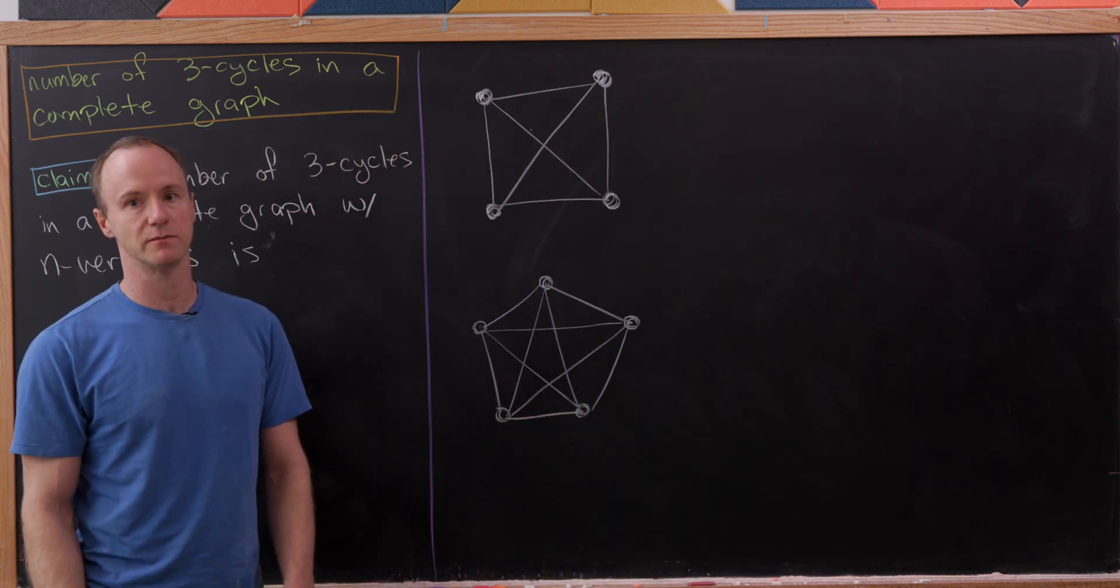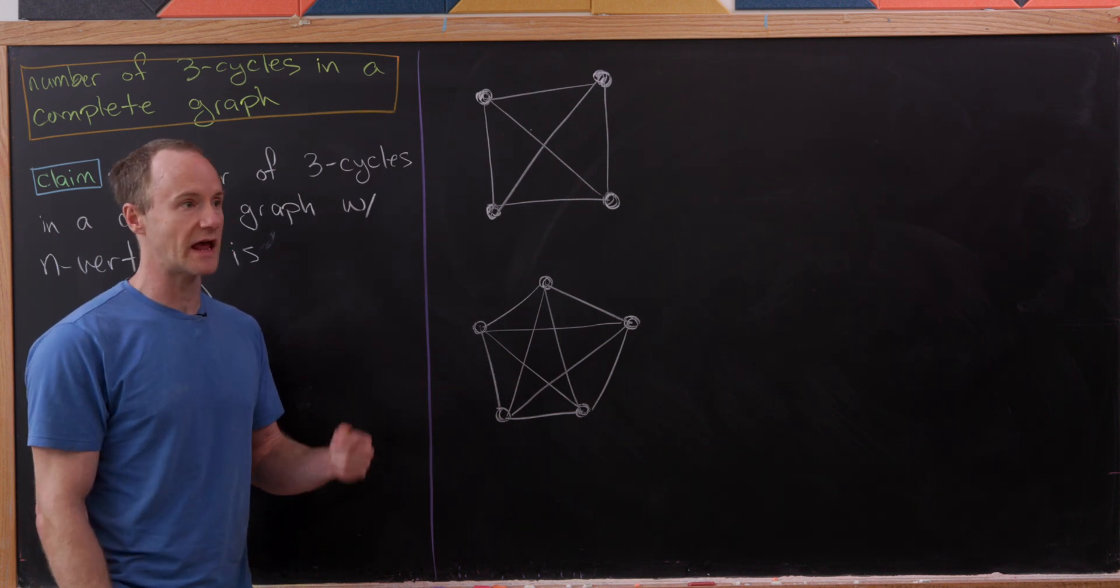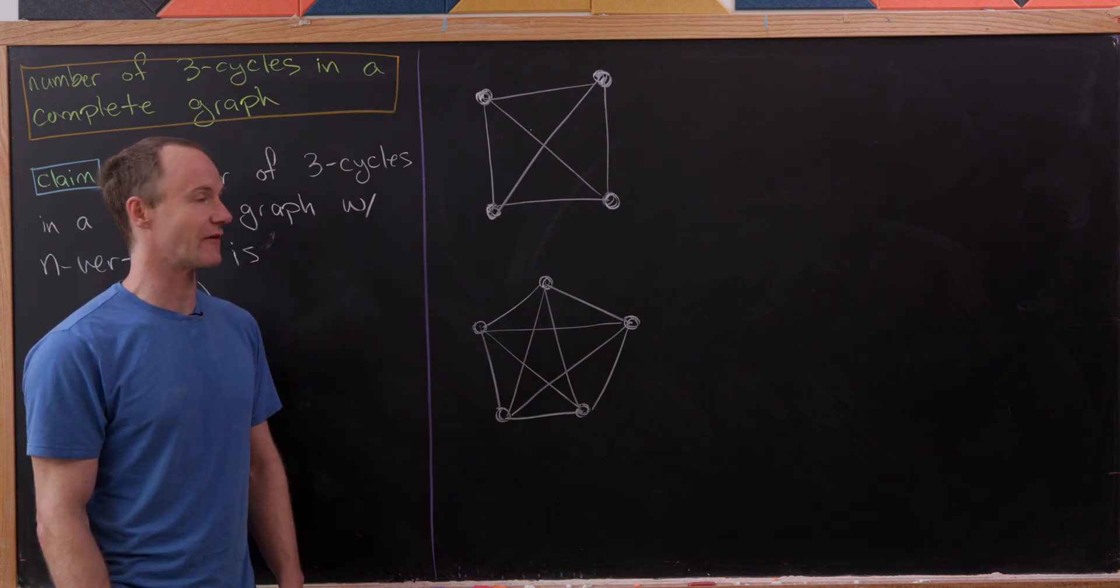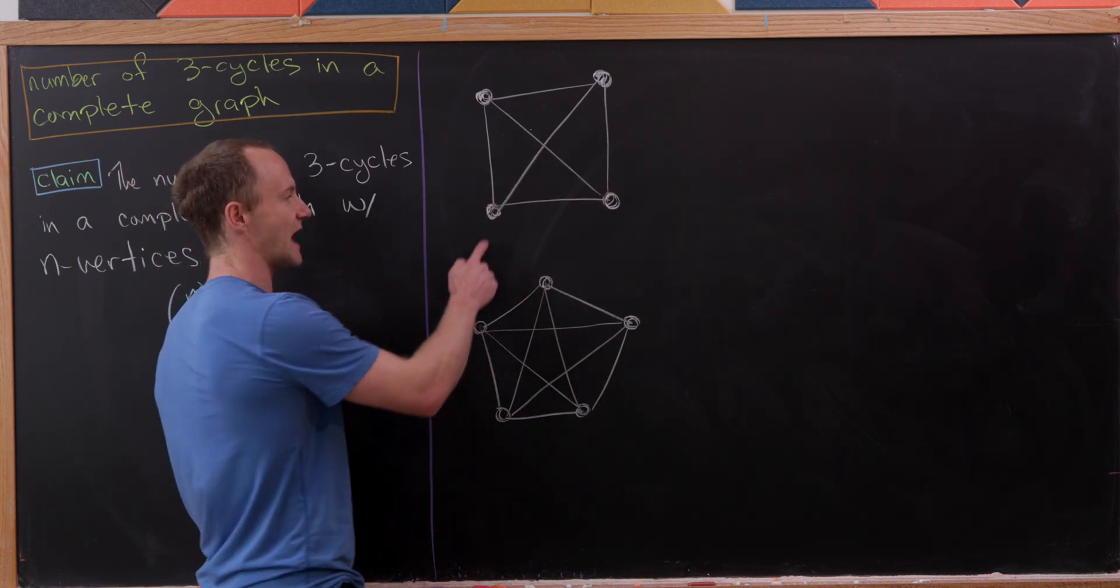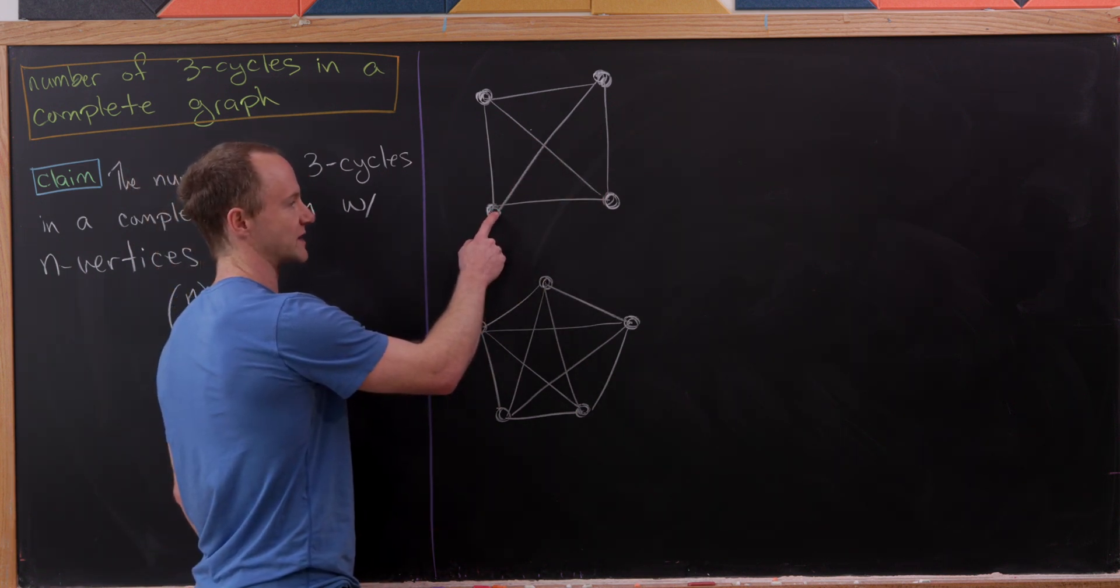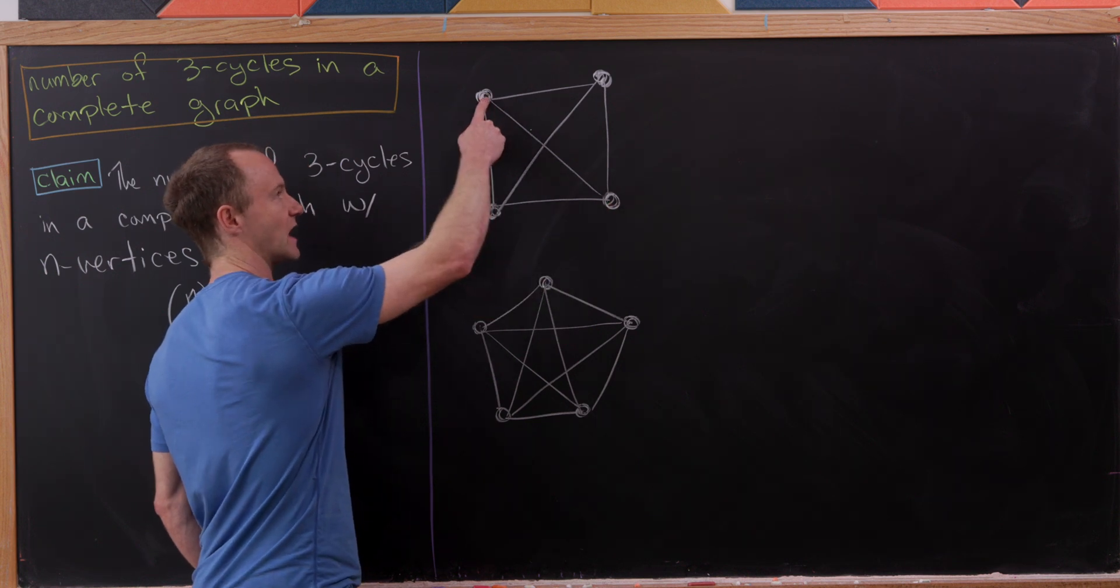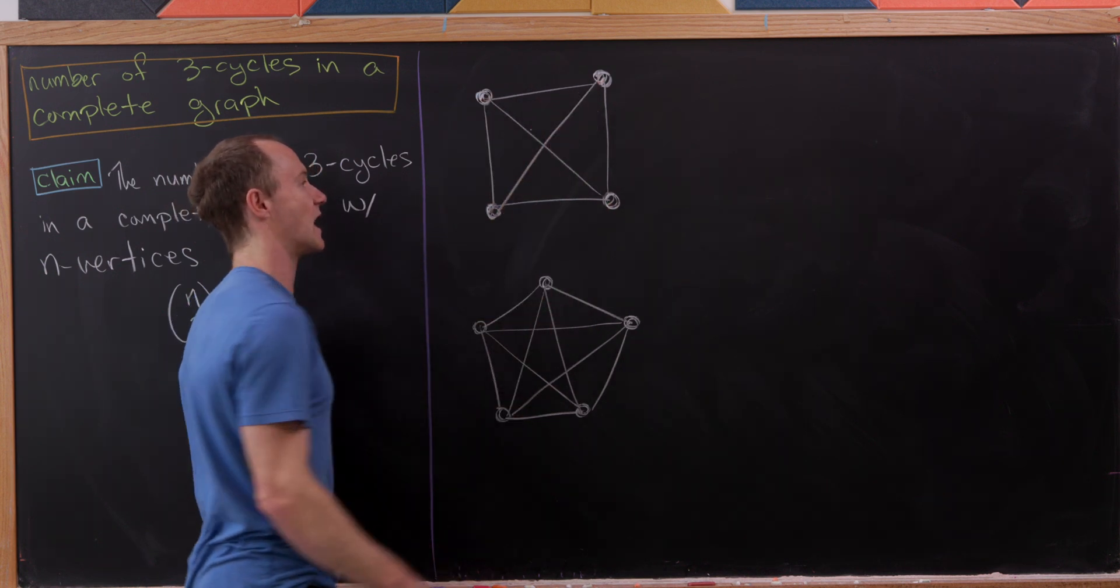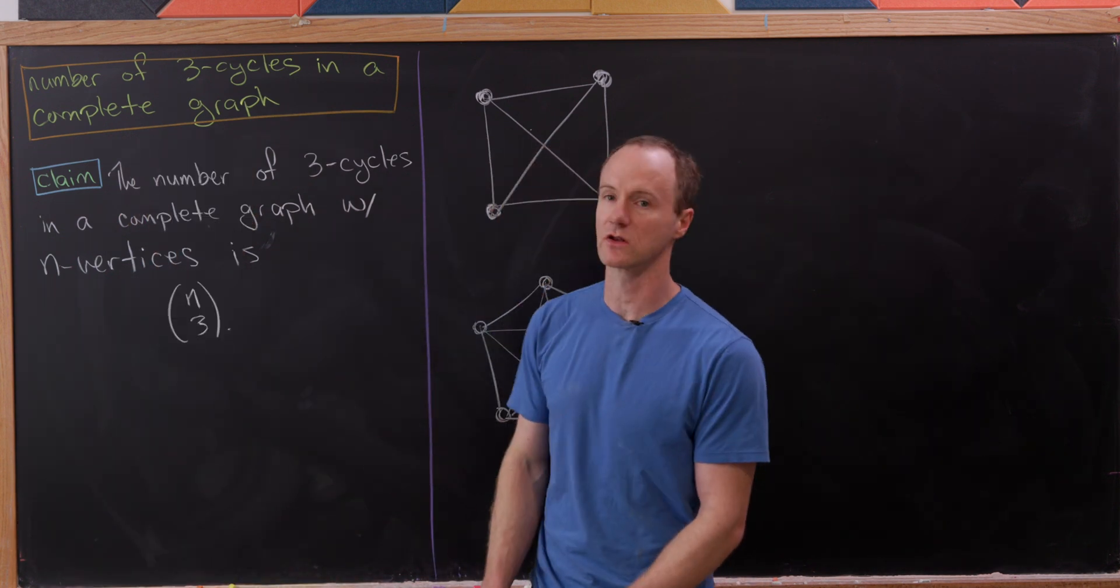Before getting started, let's recall that a complete graph is a graph where there's one and only one edge between every vertex. Here we've got four vertices, and notice there is an edge from this lower left vertex to this one in the lower right, this one in the upper left, and this one in the upper right. That's true for all vertices. Let's look at the result.